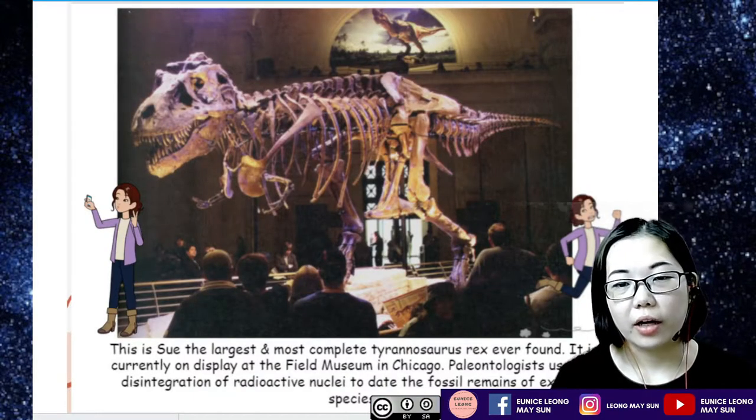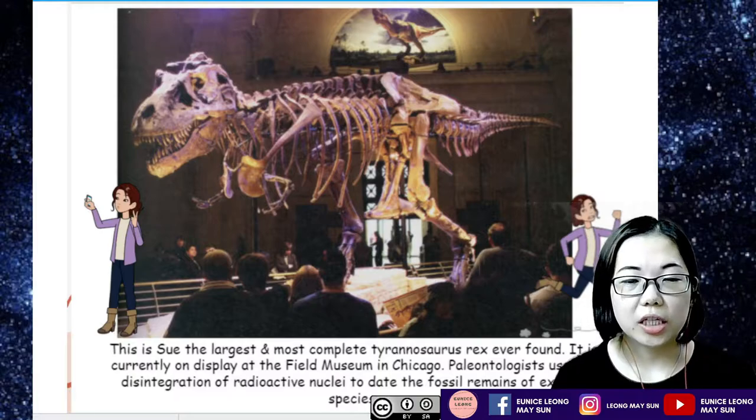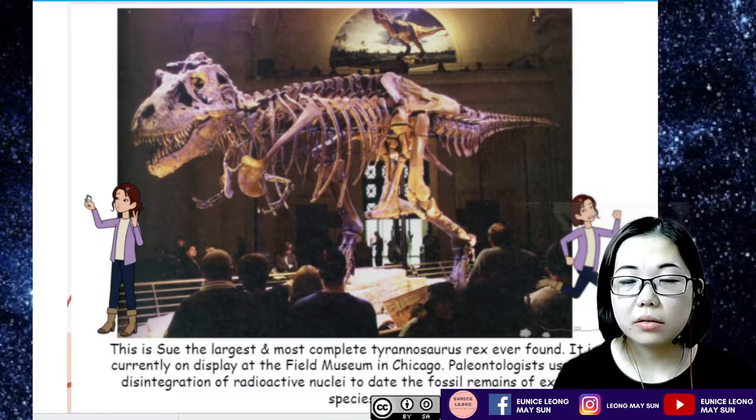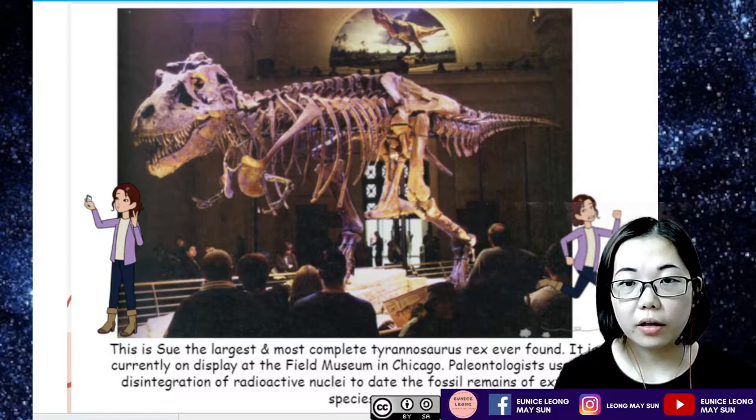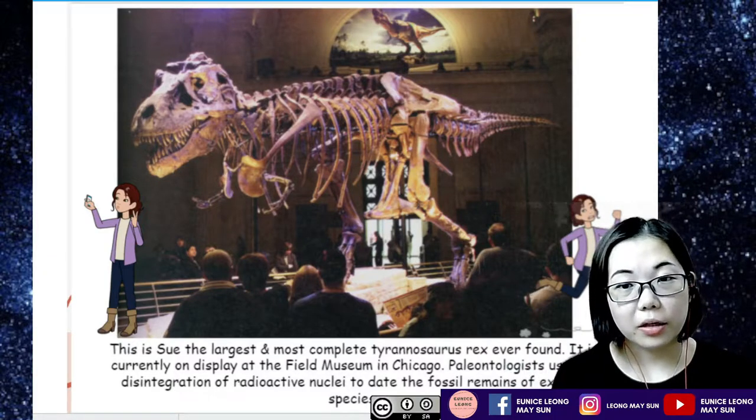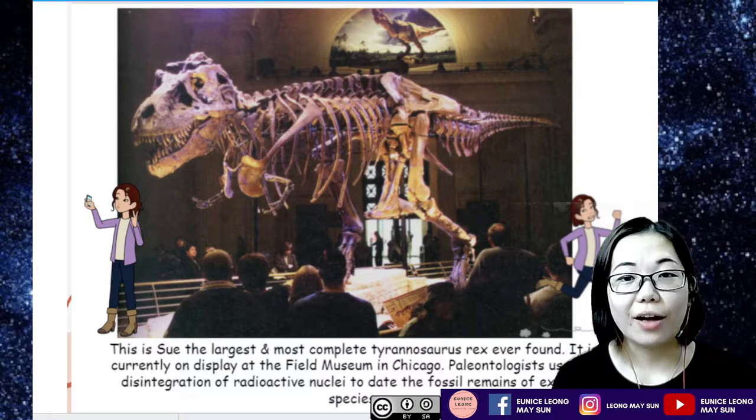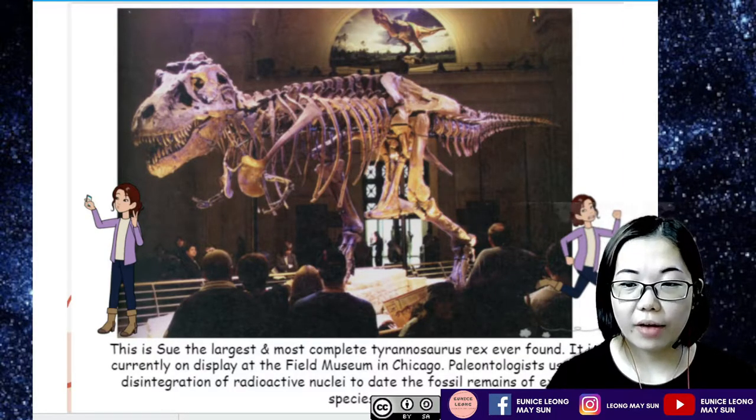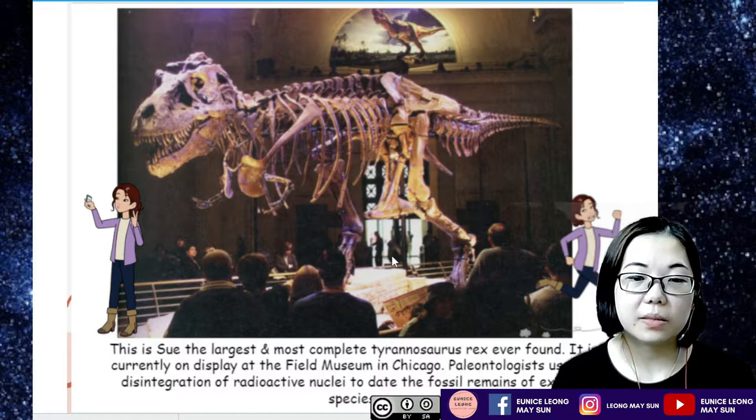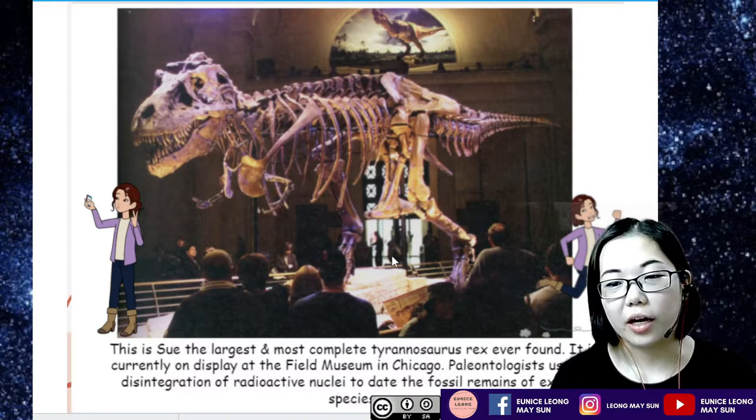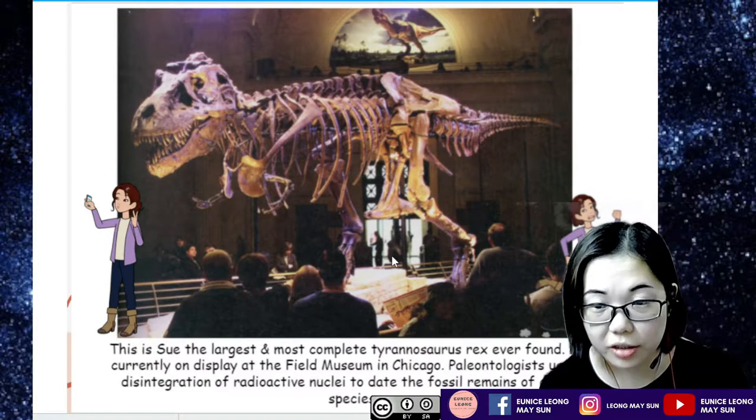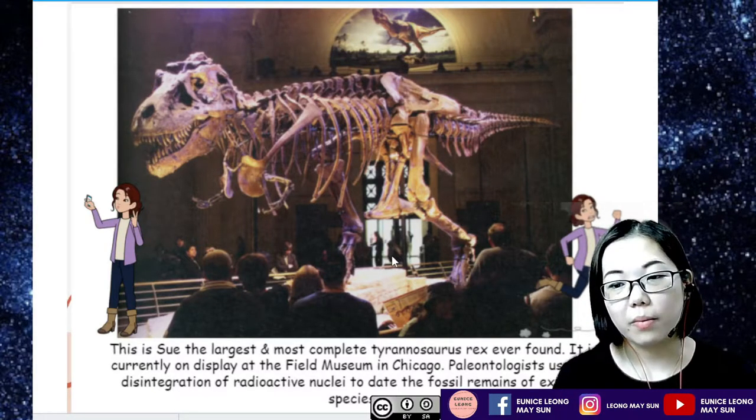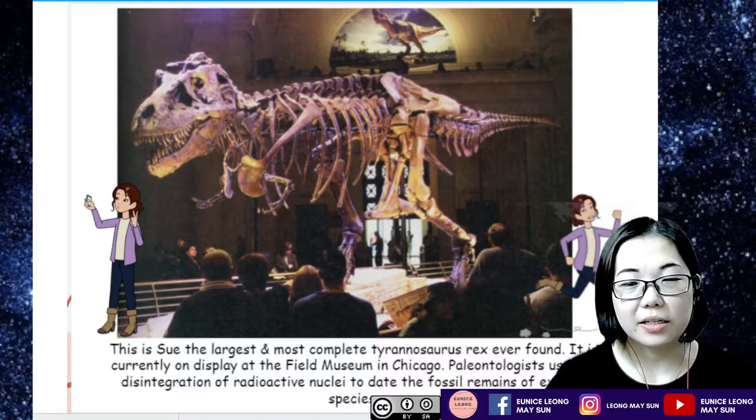One of the most important things regarding learning radioactive decay is actually to find out the age of some fossils or the age of the rocks on earth or even bigger is to find out the age of the earth itself. So for example, this is Sue, the largest and most complete T-Rex ever found and it is currently on display at the Field Museum in Chicago. So paleontologists actually use the disintegration of radioactive nuclei to date the fossil remains of extinct species.